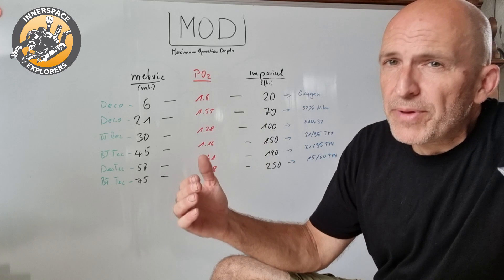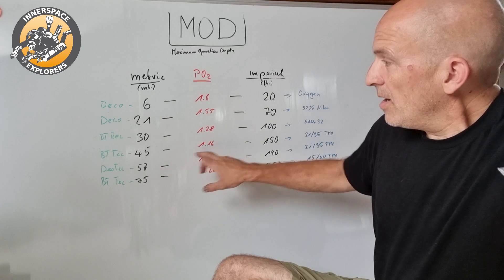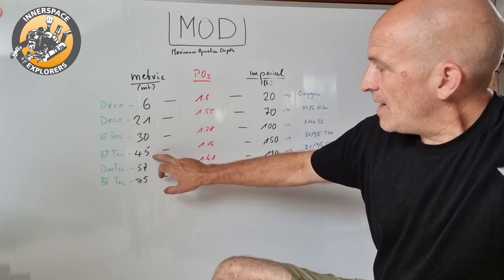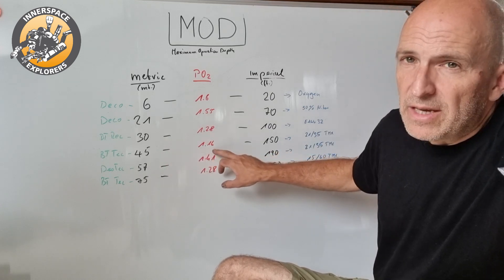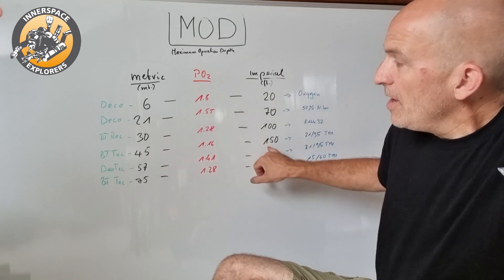Here my MOD for that gas is defined by 1.16. That's what's labeled on the tank: 45 meters, 150 feet.